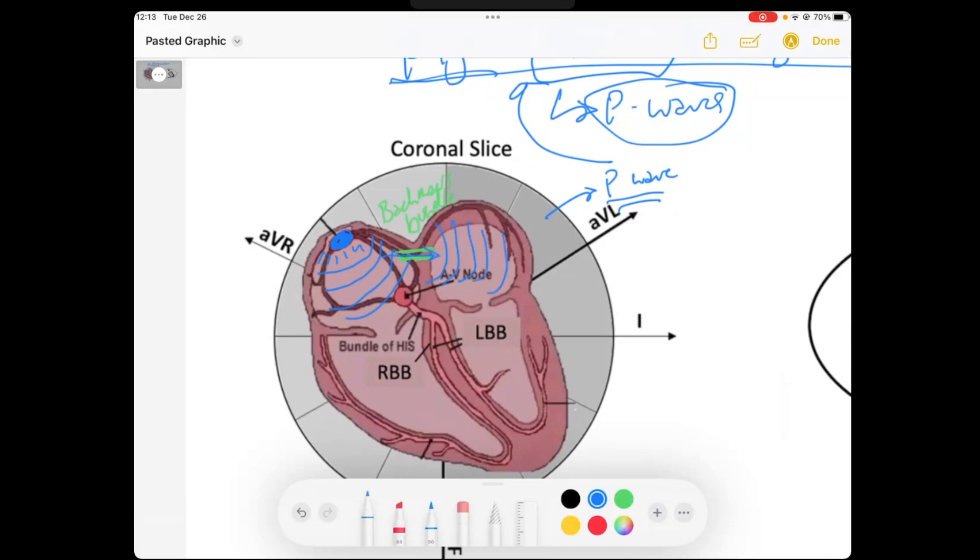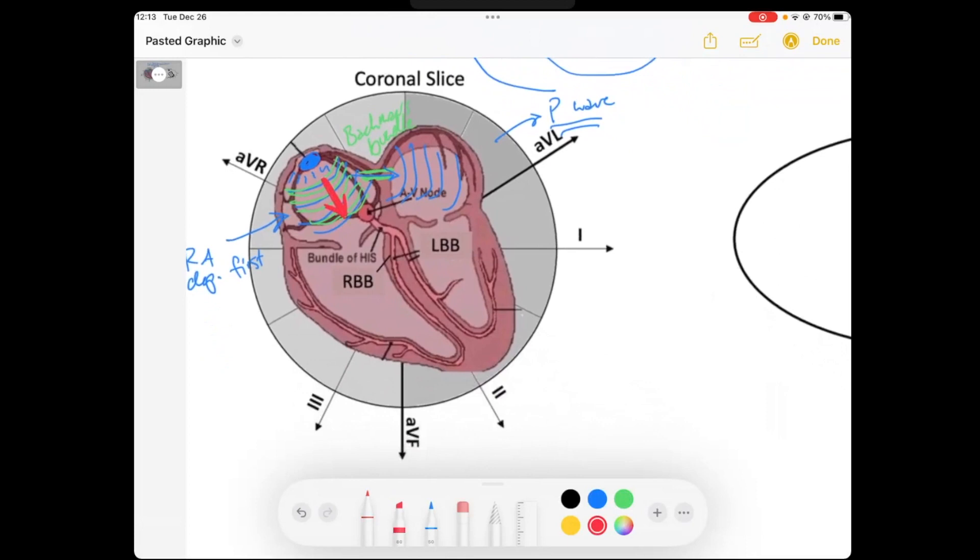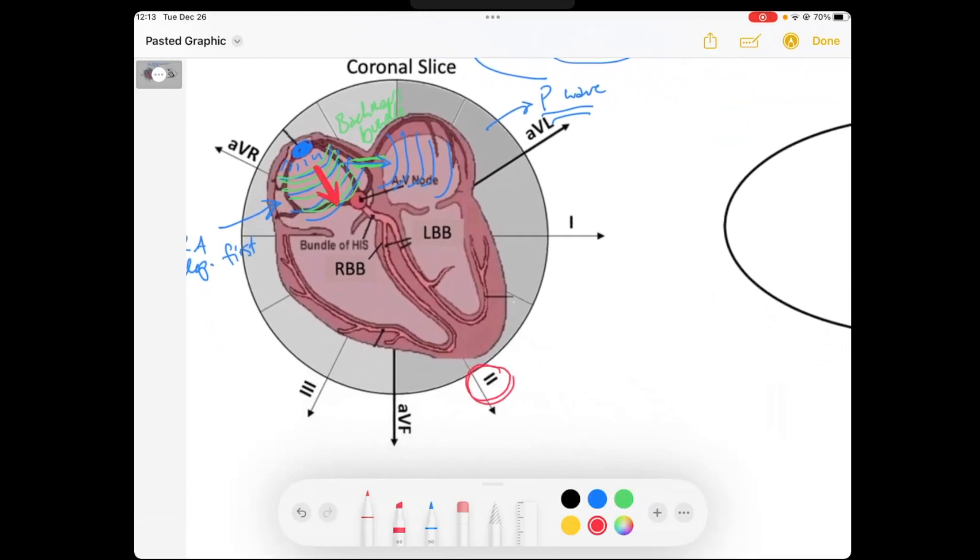From a time perspective, we can understand that the right atria depolarizes first. And as it's depolarizing, we notice that those signals are predominantly going from superior to inferior and from right to left. If I drew the arrow of the axis of the right atrial depolarization, it would be something like this. And you would notice, lead 2 would capture that signal the best, seeing that lead 2 is almost oriented exactly in that direction.